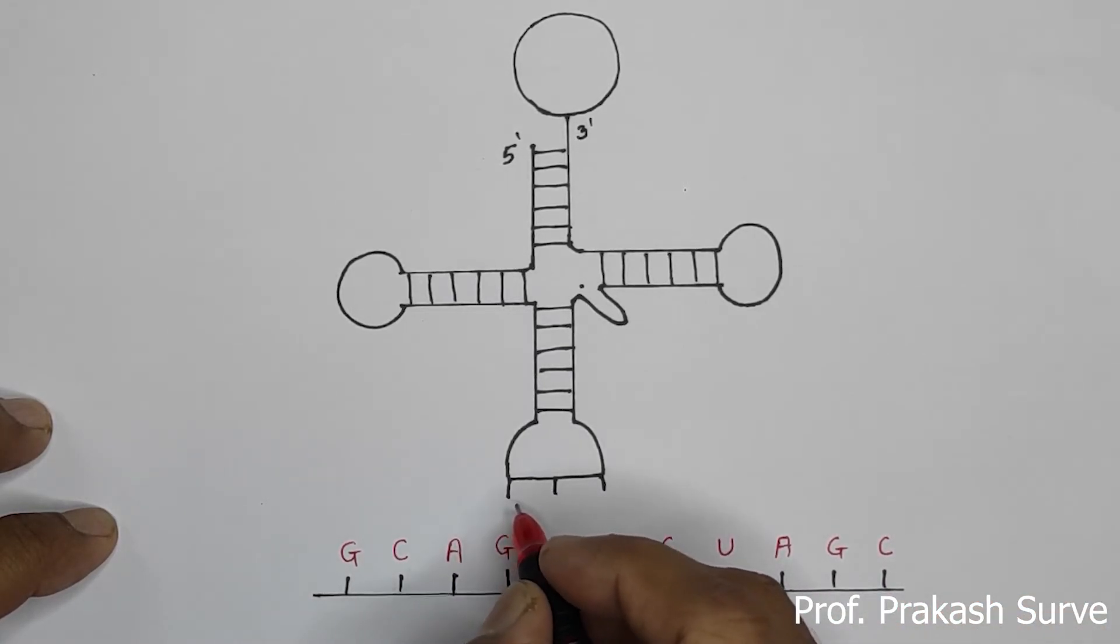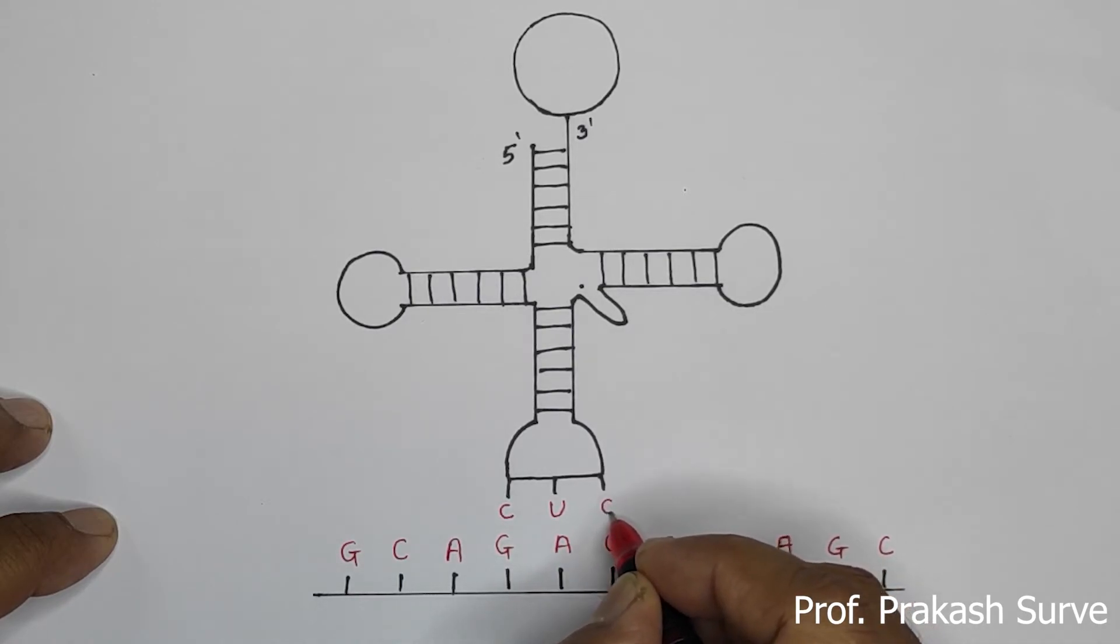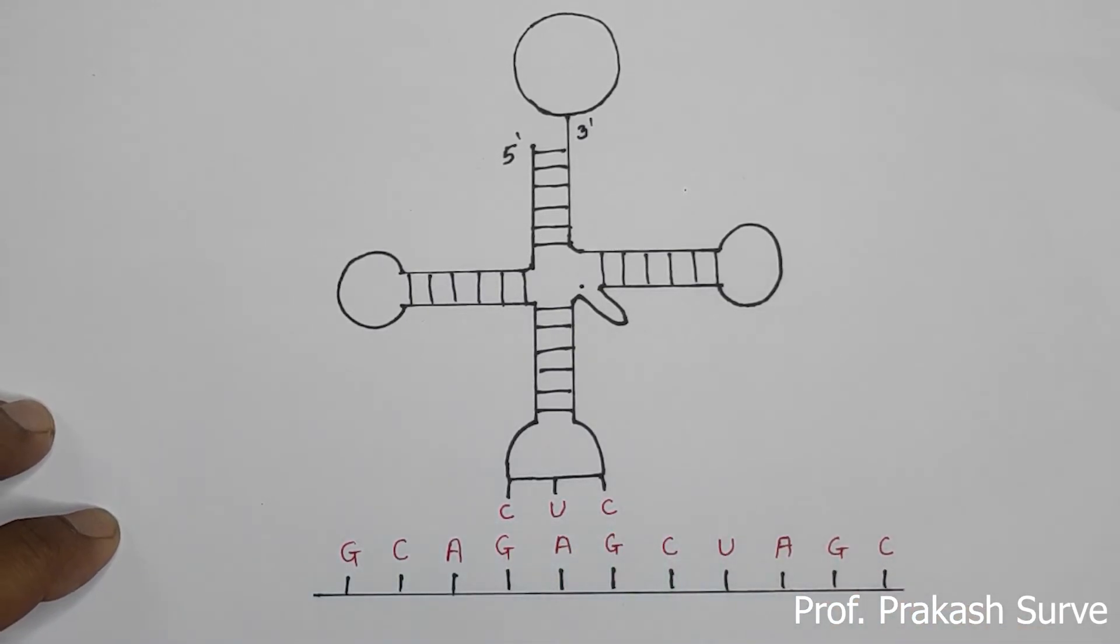Corresponding to this here, anticodon. So here we got C. Here U. And here is a C. So these are what the pairings are there.